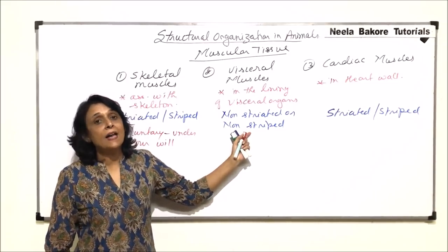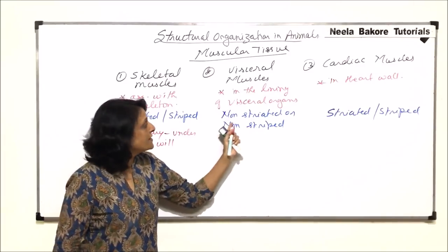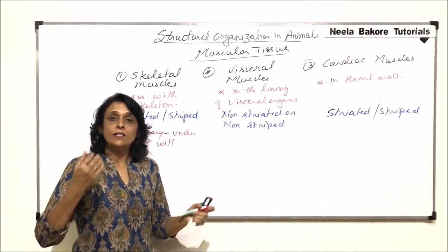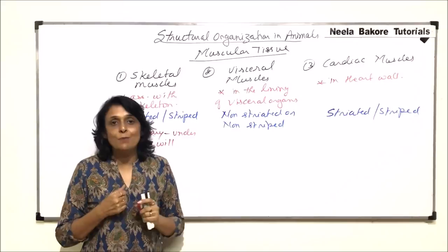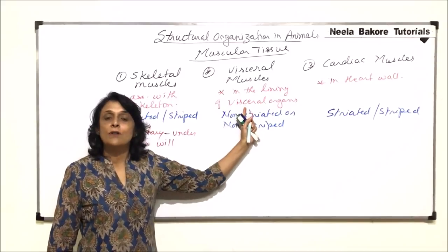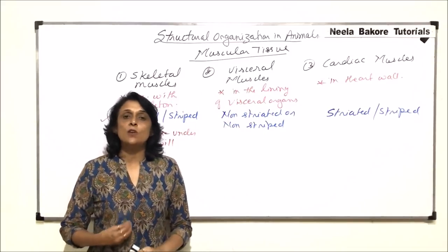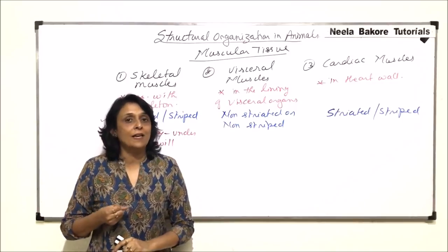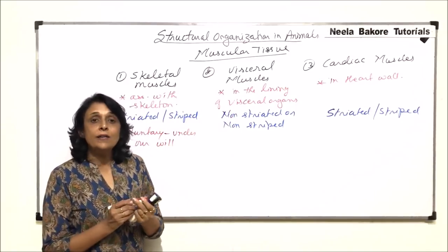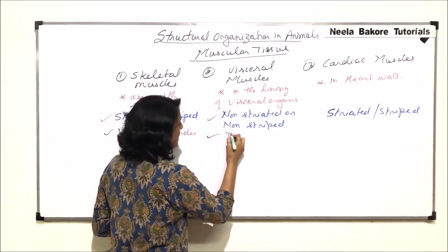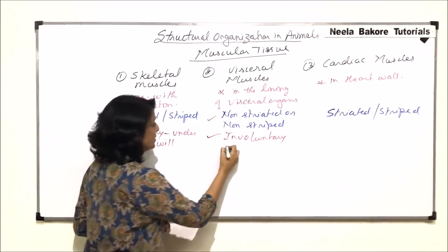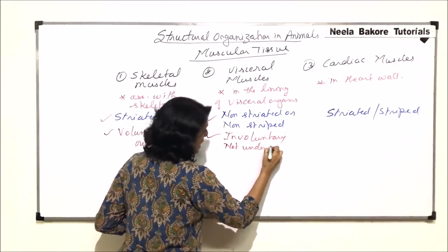Visceral muscles are not under our control. They are found in the lining of the viscera — the stomach, intestine. Once we eat food, it goes into the alimentary canal and peristalsis takes place. Peristalsis is due to the contraction of these smooth muscles. We cannot control the movement of food in the intestine or the peristaltic movement, so these muscles are involuntary — not under our will.